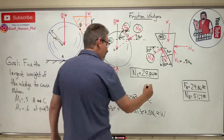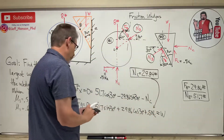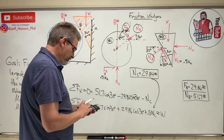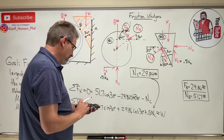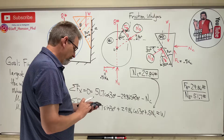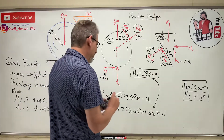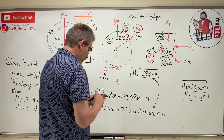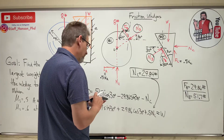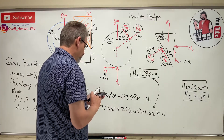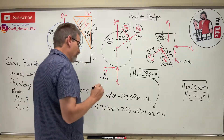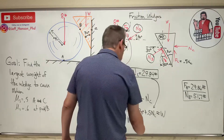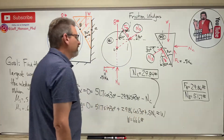Now plugging NC back into the y-equation to get W: 51.7 sin30 plus 29.86 cos30 plus 0.5 times 29.84 equals 66.63. So W equals 66.6 pounds.